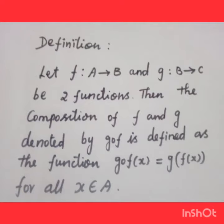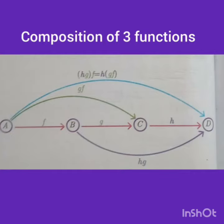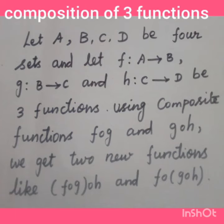Now let's see the composition of three functions. We consider the sets A, B, C, D and functions f from A to B, g from B to C, and h from C to D. The composition of three functions is denoted by f circle g circle h.